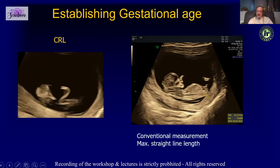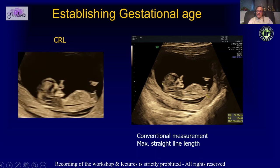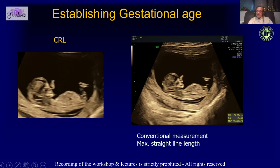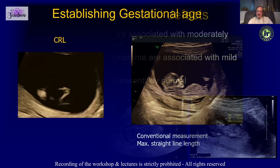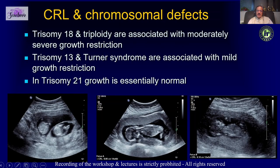We measure the CRL from the crown to the rump in its maximum dimension in a straight line. This is important because even at this stage we can have chromosomal abnormalities.